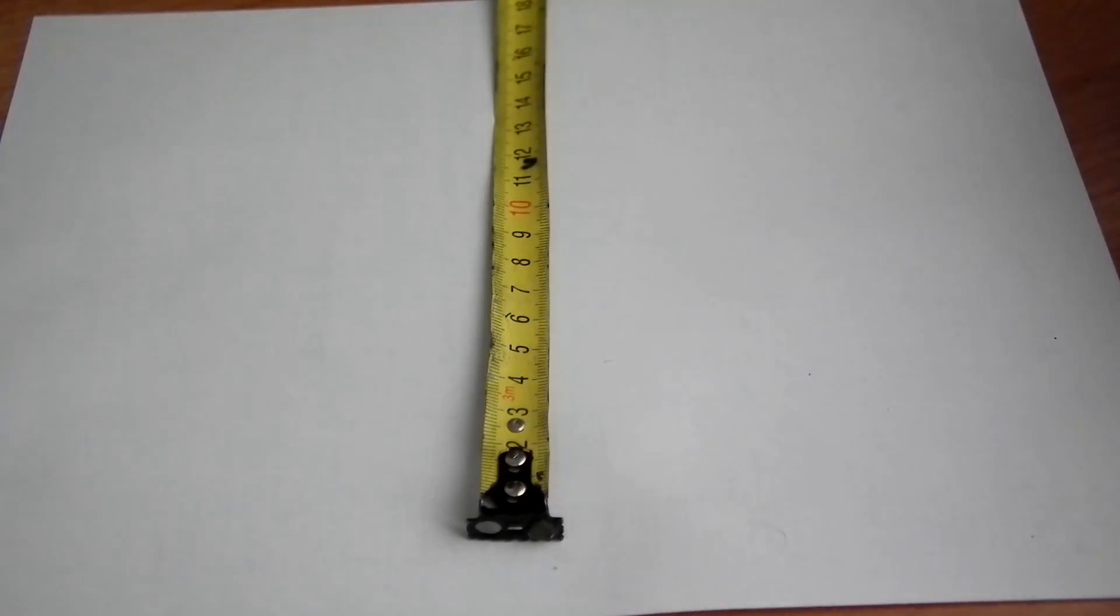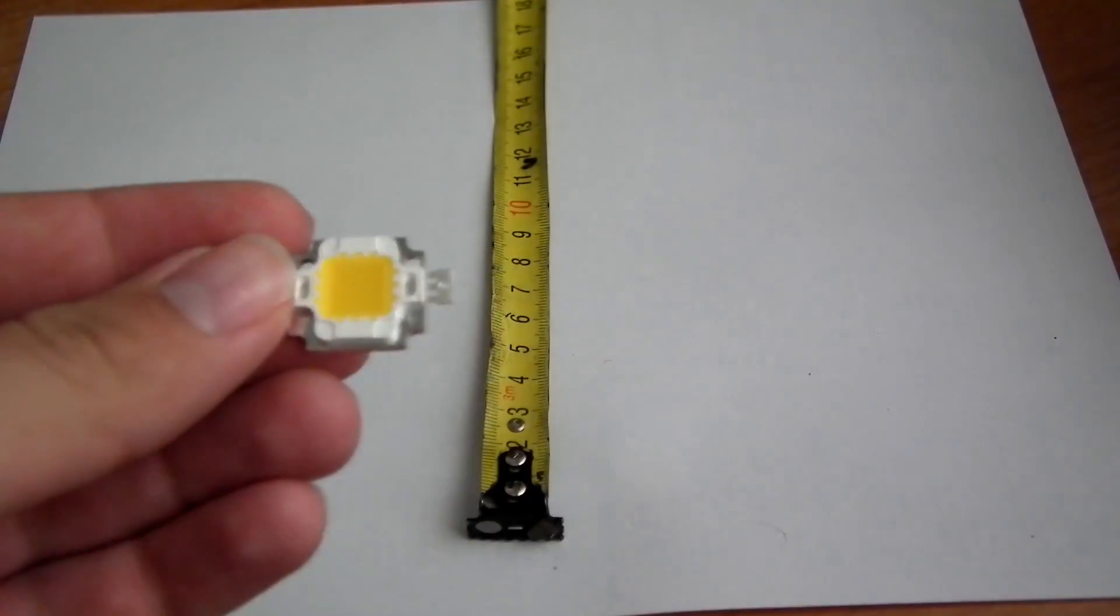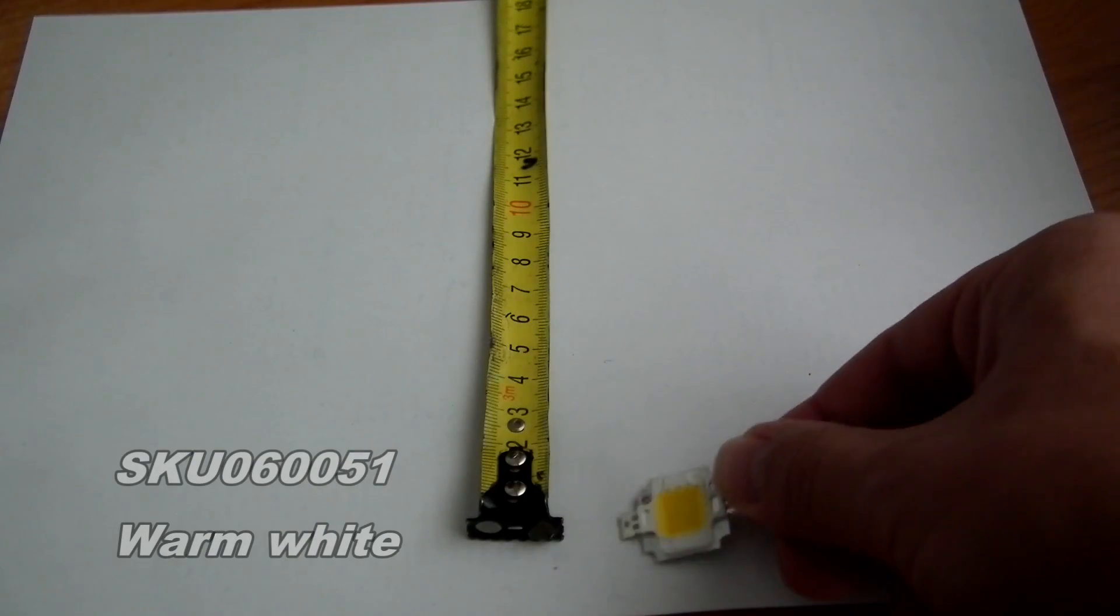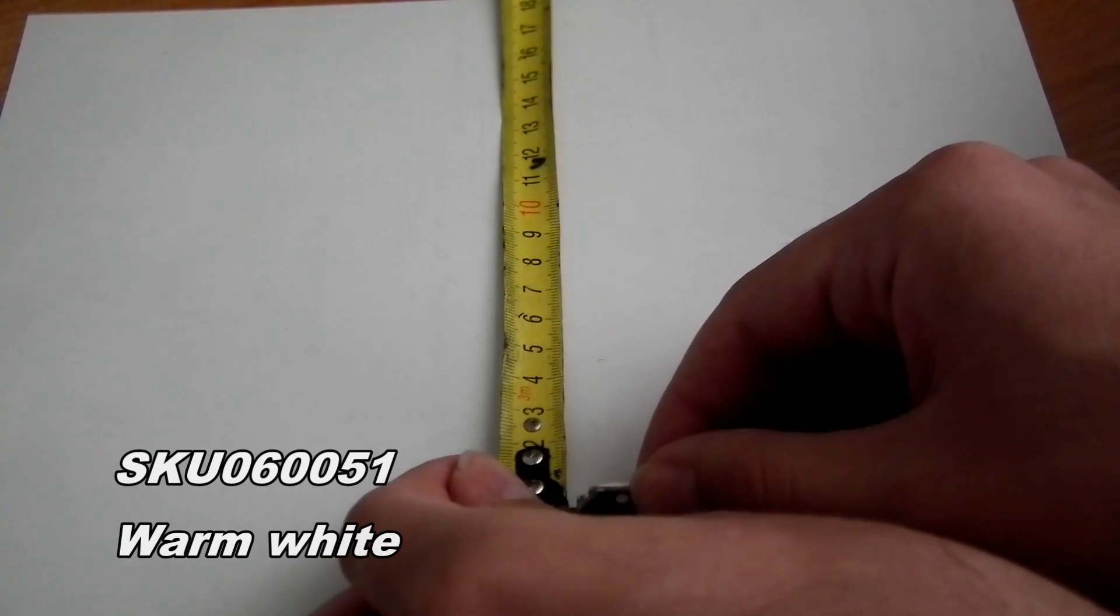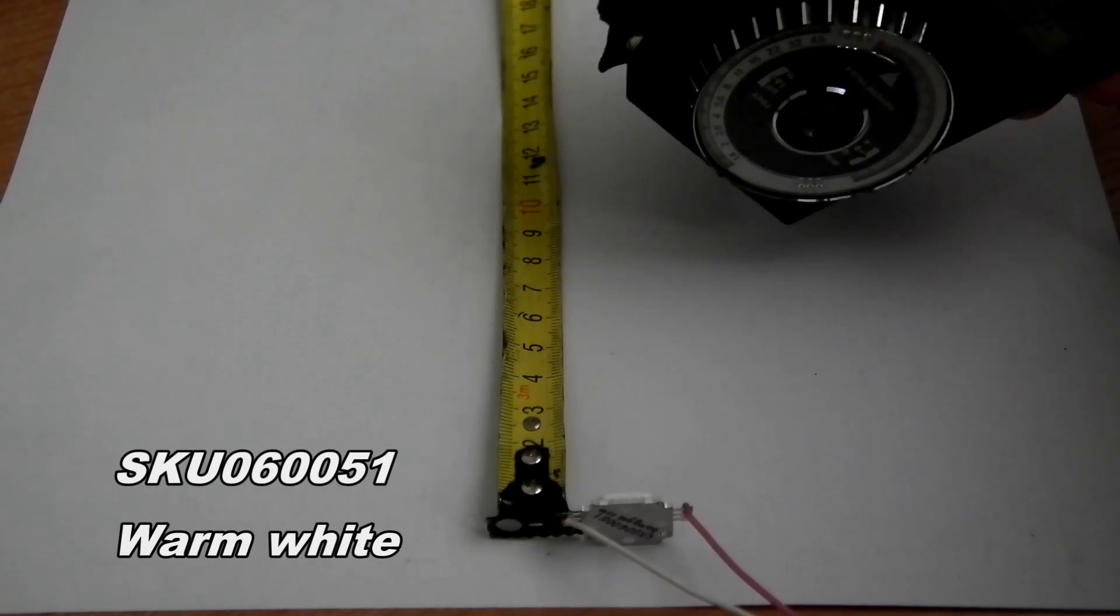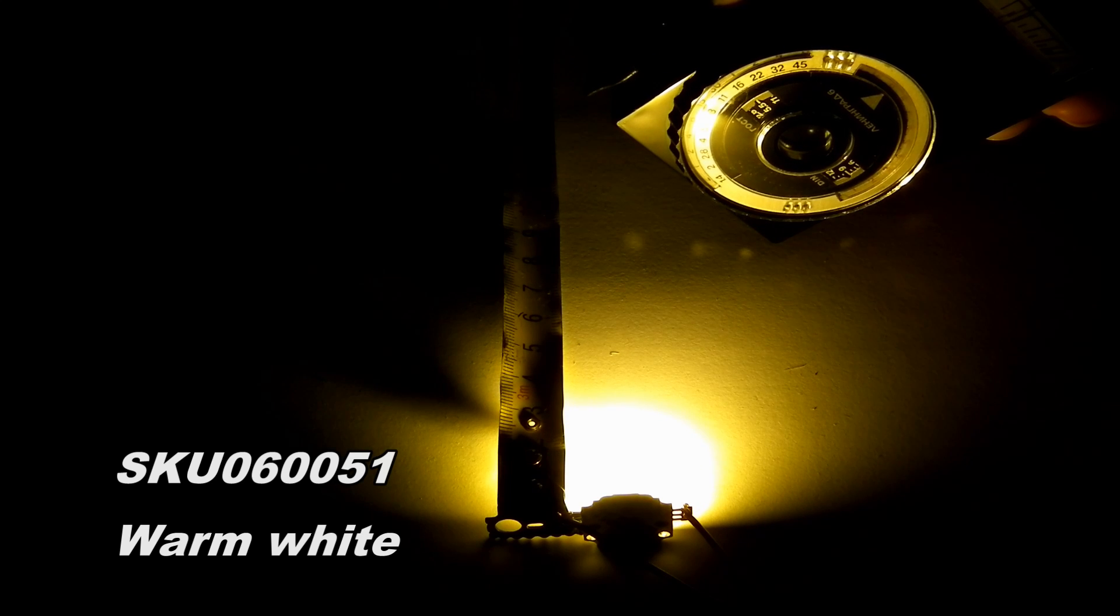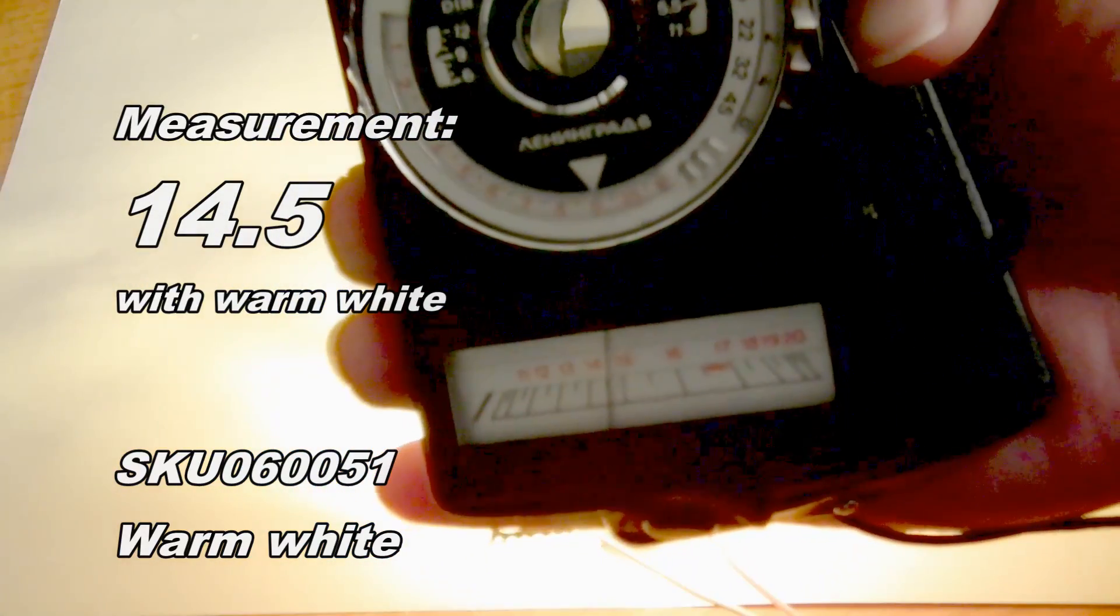Next, I tested the warm white diode, the one on the left. The measurement was 14.5 units.